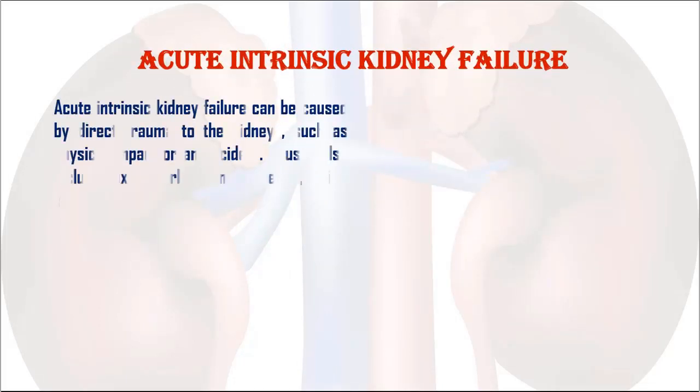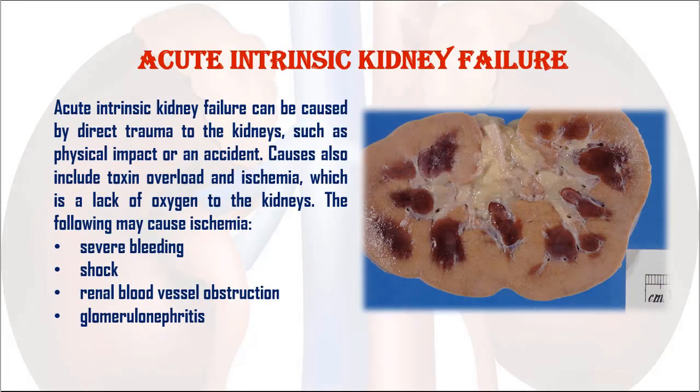2. Acute intrinsic kidney failure. Acute intrinsic kidney failure can be caused by direct trauma to the kidneys, such as physical impact or an accident. Causes also include toxin overload and ischemia, which is a lack of oxygen to the kidneys. The following may cause ischemia: severe bleeding, shock, renal blood vessel obstruction, and glomerulonephritis.